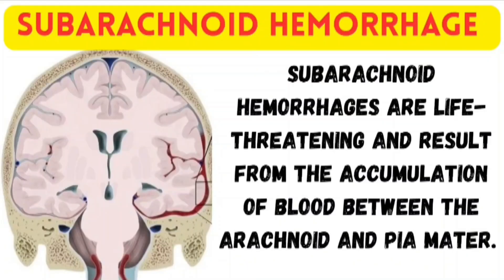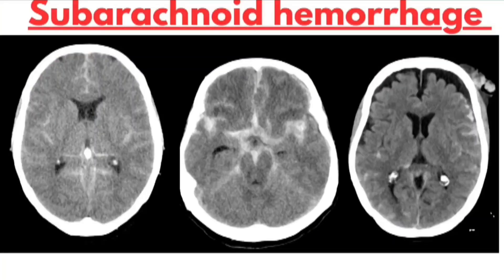Subarachnoid hemorrhage is bleeding that occurs in the space between the arachnoid and pia mater. This space normally contains cerebrospinal fluid, but blood leaks into it — often due to a ruptured aneurysm or trauma — increasing pressure on the brain and quickly becoming life-threatening. Patients may present with sudden severe headache, nausea, vomiting or loss of consciousness. On CT scan, hyperdense areas appear bright within the sulci, cisterns and basal cisterns where blood has accumulated in the subarachnoid space. Urgent medical attention is essential.